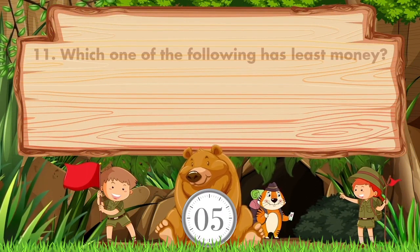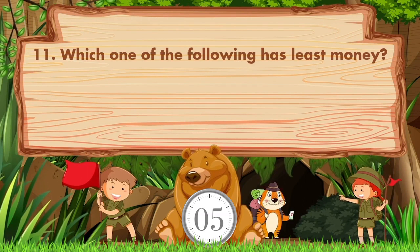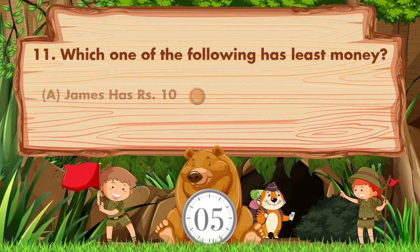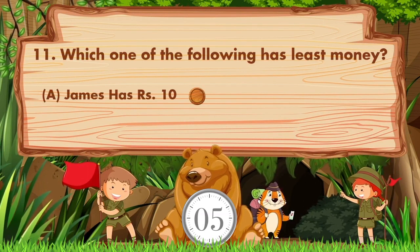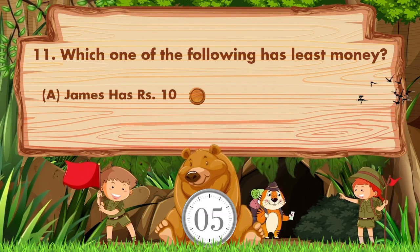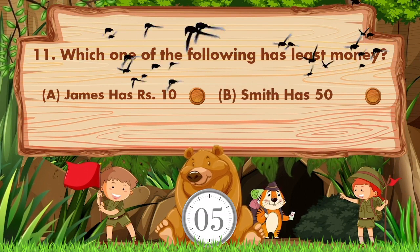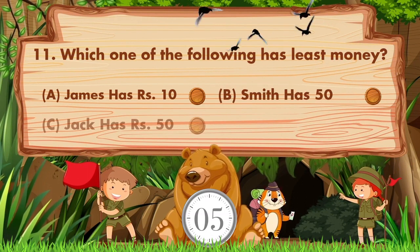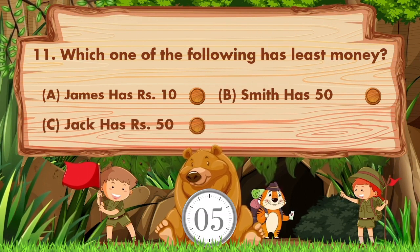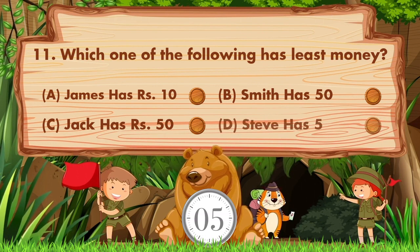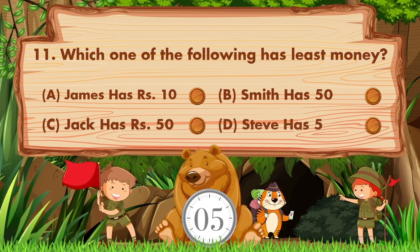Which one of the following has the least money? Option a: James has 10 rupees, option b: Smith has 50 paisa, option c: Jack has 50 rupees, option d: Steve has 5 paisa.